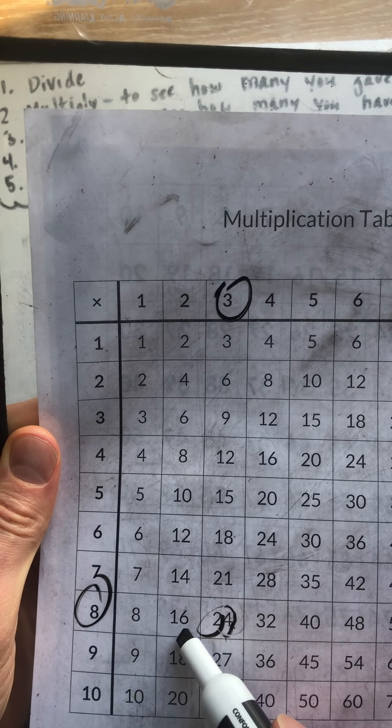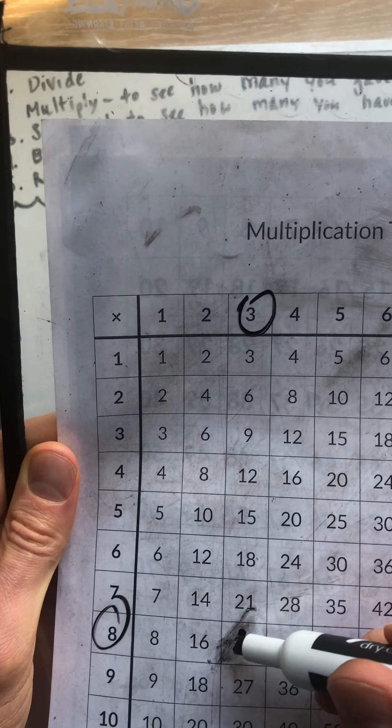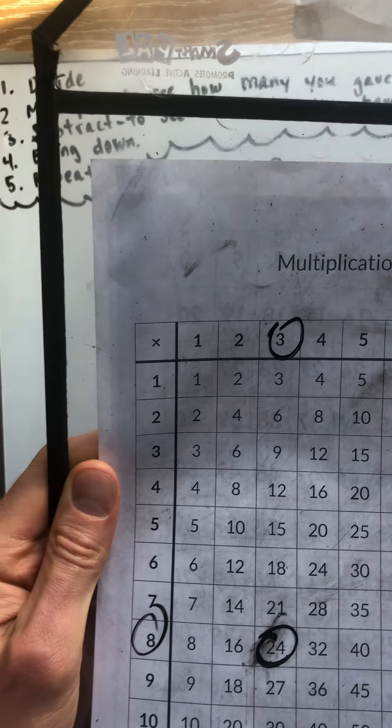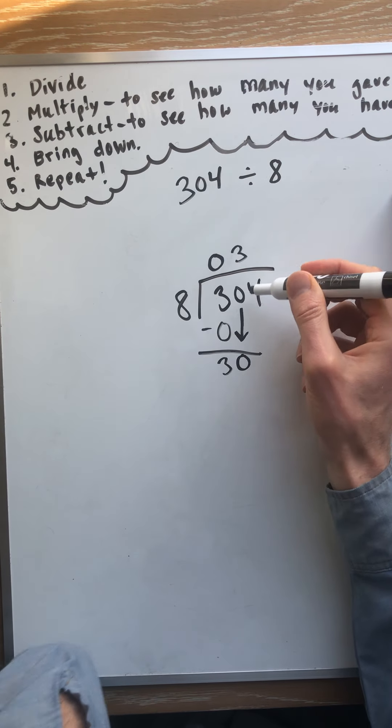2 times 8 is 16. 3 times 8 is 24. It's hard to see it, but that's what it says. 24. So 3. 8 times 3 equals 24, which is as close to 30 as we can get.